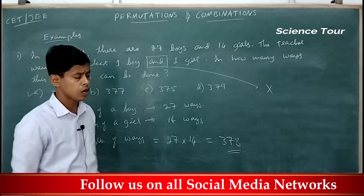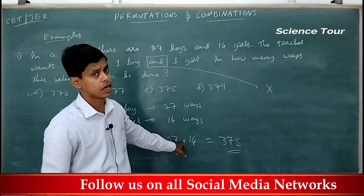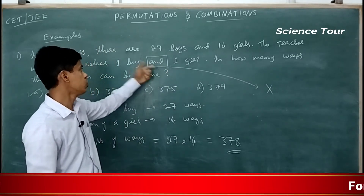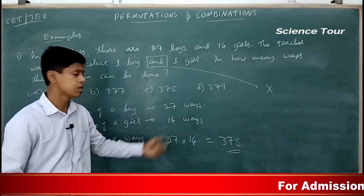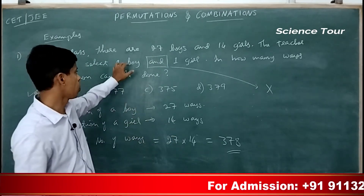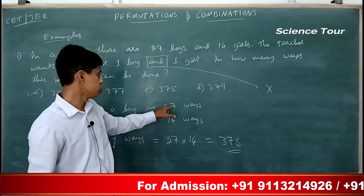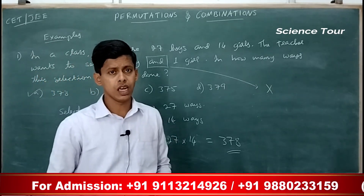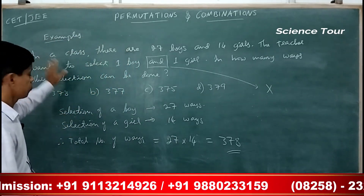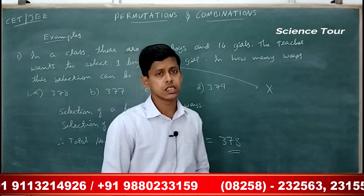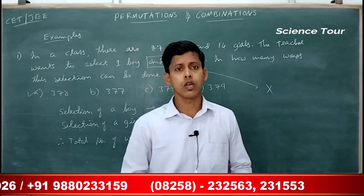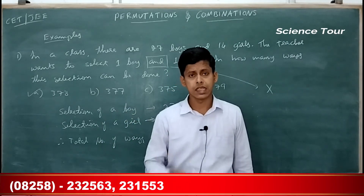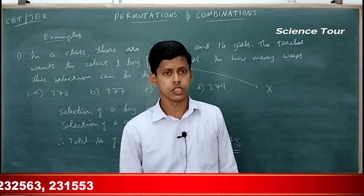How do you know whether to multiply or add? Look out for the keyword: you need one boy and one girl, therefore you multiply. If the question was one boy or one girl, you just add 27 and 14. We will be solving more questions based on the counting principle and then move to permutations.